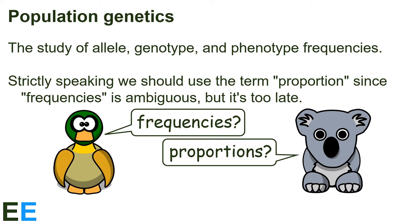It's useful to keep this in mind, however, since proportions can never be larger than 1, while frequencies in other contexts can. Any allele, genotype, or phenotype frequency we calculate must have a value between 0 and 1. From now on, I'll refer to the proportions as frequencies, but keep this in mind.